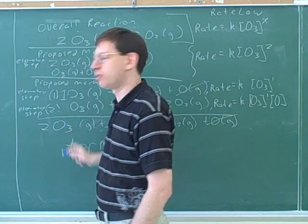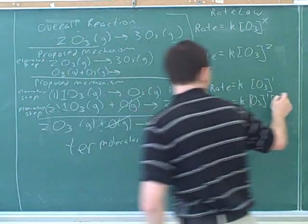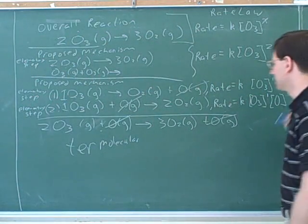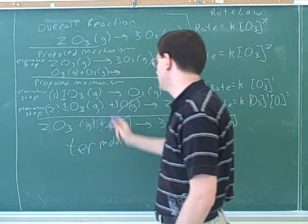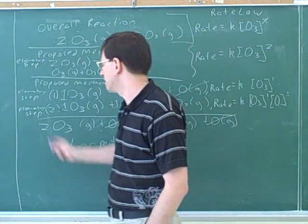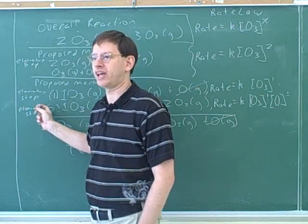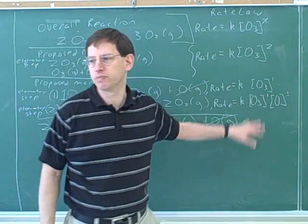Remember, if we don't write the coefficient, it's a coefficient of 1. And what should this exponent be? 1. Because there's a coefficient of 1. Why is it legal to use these coefficients? Because this was proposed as an elementary step. So this is what's really happening, so it really can predict what the rate would be.